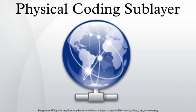The Physical Coding Sublayer is a networking protocol sublayer in the Fast Ethernet, Gigabit Ethernet, and 10 Gigabit Ethernet standards. It resides at the top of the Physical Layer and provides an interface between the Physical Medium Attachment Sublayer and the Media Independent Interface. It is responsible for Data Encoding/Decoding, Scrambling/Descrambling, Alignment Marker Insertion/Removal, Block and Symbol Redistribution, and Lane Block Synchronization and Deskew.